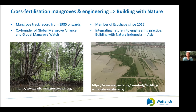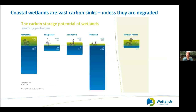Over the last decade, it became more and more clear how important coastal wetlands are for carbon storage. In this graph, you see coastal wetlands on the left side — mangroves, seagrasses, and salt marshes — compared to tropical forests. Per unit hectare, especially mangroves contain a lot of carbon, mostly concentrated in the subsoil, depicted by the blue bar.